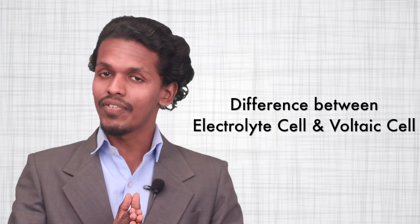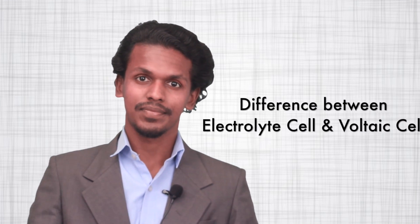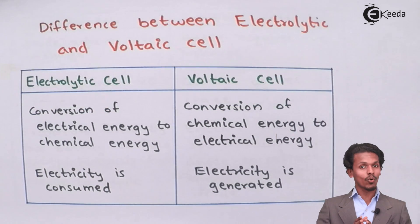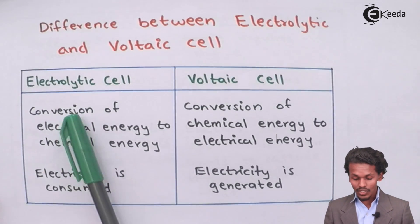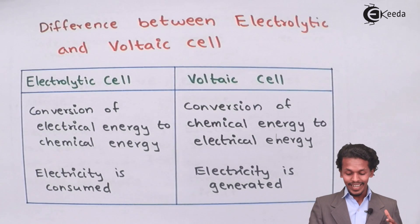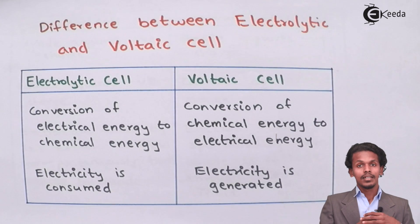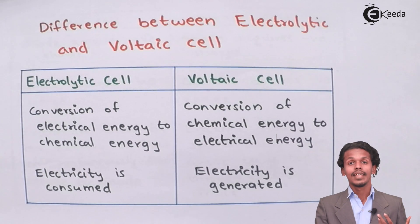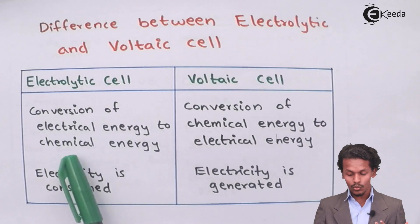So now we are going to look at the differences between these two cells — what is exactly the difference between them. The first difference: the electrolytic cell is a cell in which the conversion of electrical energy to chemical energy takes place.